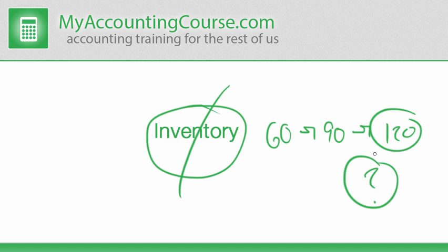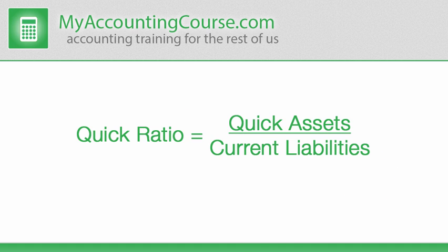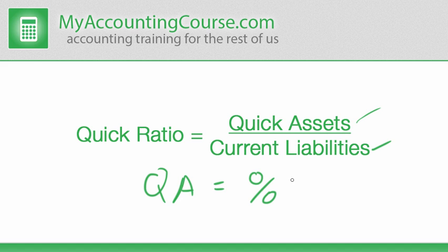The quick ratio, or the acid test ratio, is calculated by dividing quick assets by current liabilities. As you can see, this makes quick assets a percentage of current liabilities.